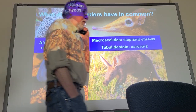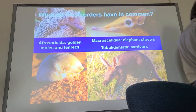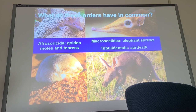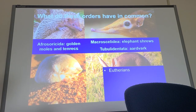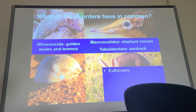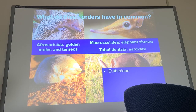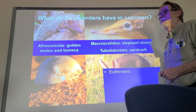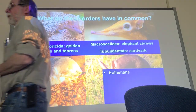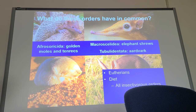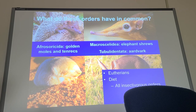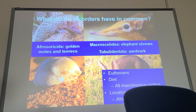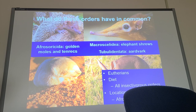Why are these groups put together? There are a number of reasons. Primarily, they're linked together phylogenetically — they have a similar background. They're all eutherians, they're all insectivorous — primarily eating ants — and they're all found only in the Afrotropical region.